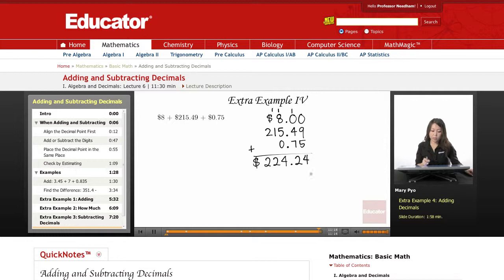And this is your answer. So $8 plus $215.49 plus $75 becomes $224.24. So that's it for this lesson on adding and subtracting decimals. Thank you for watching Educator.com.